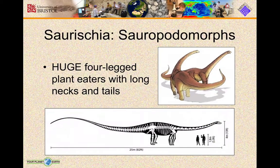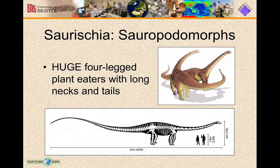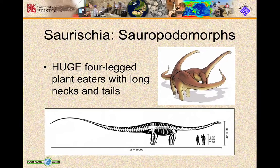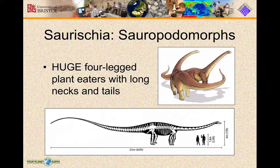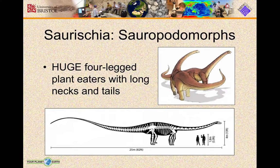The sauropods are the monsters of the Jurassic. These are the huge quadrupedal, long-necked, long-tailed dinosaurs — all herbivores. There must have been a fairly incredible sight, a herd of these moving through a landscape, stripping it of its vegetation. They must have been a machine for transforming plant material into energy and dung.